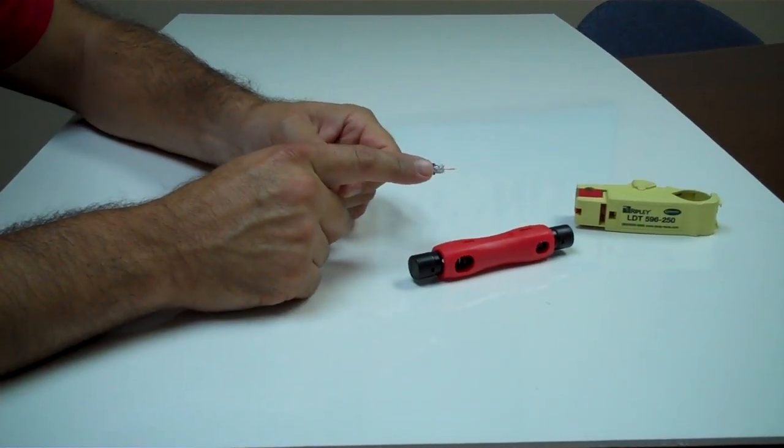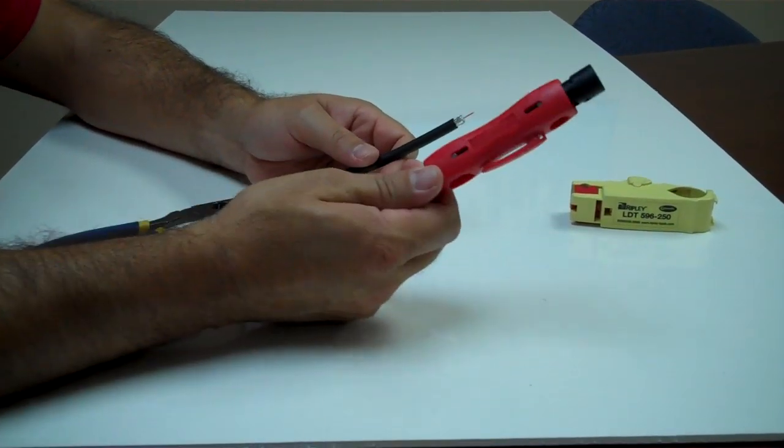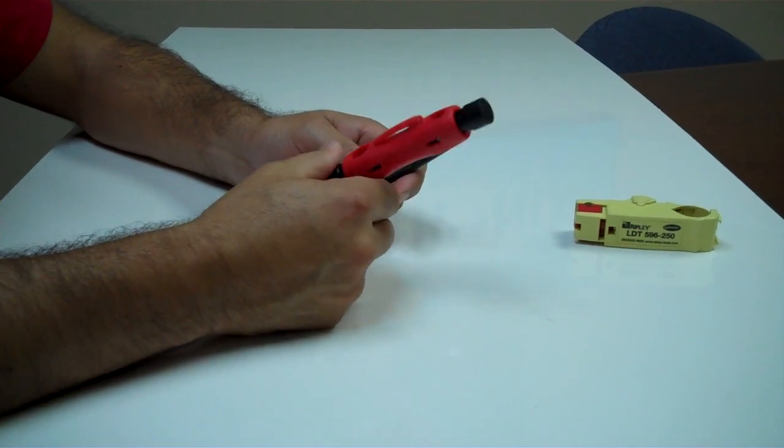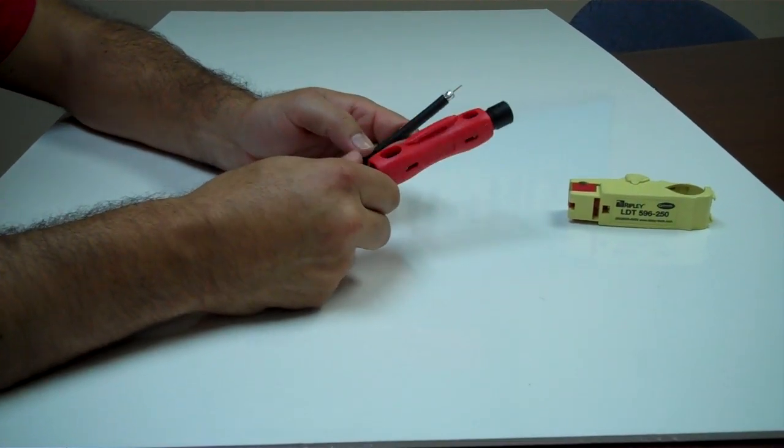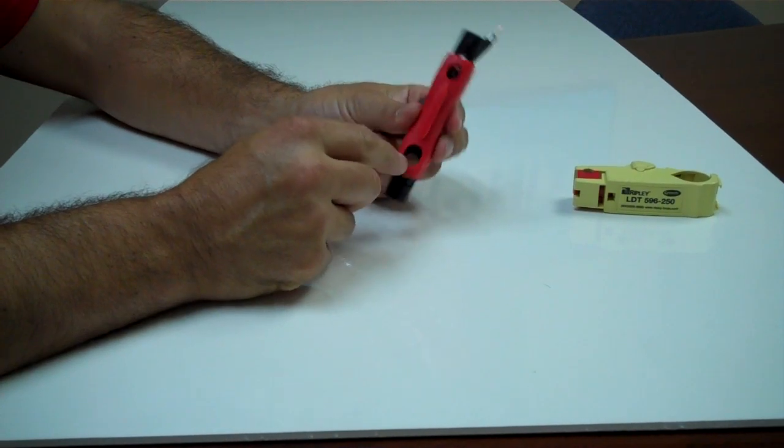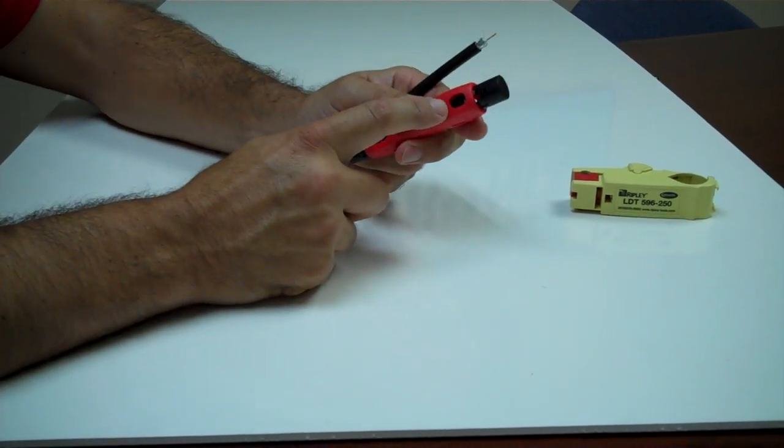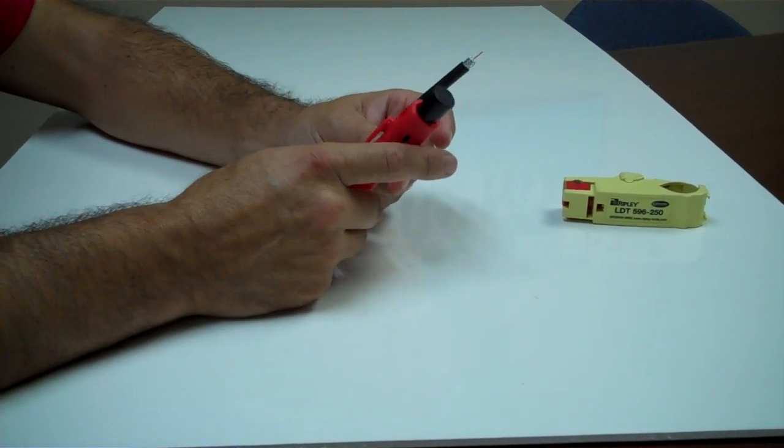In order to get that quarter quarter cut over your coax, Platinum Tools come out with a real simple little gadget here. It works for RG-7 coax, RG-11 coax, and RG-59 and RG-6 coax on this side.